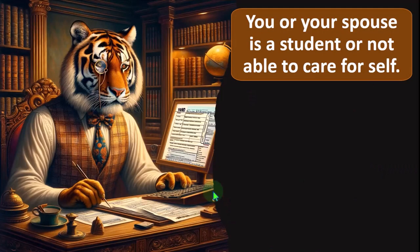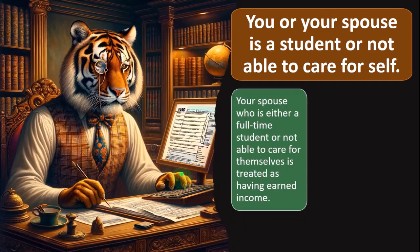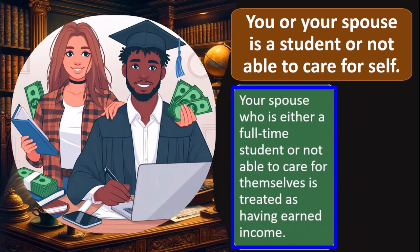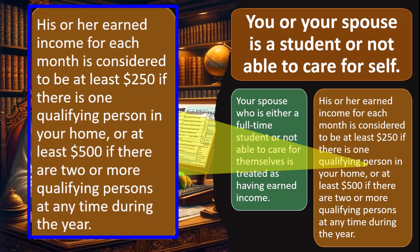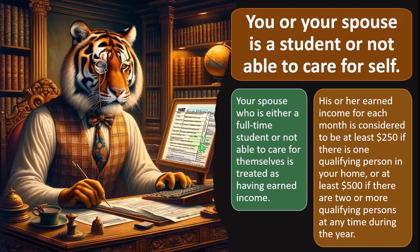If you or your spouse is a student or not able to care for themselves, your spouse who is either a full-time student or not able to care for themselves is treated as having earned income. The idea is that if a spouse is not working, they should be able to care for the child — unless they can't. Their deemed earned income is at least $250 per month if there is one qualifying person, or at least $500 if there are two or more qualifying persons.